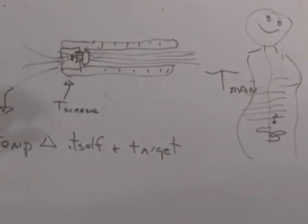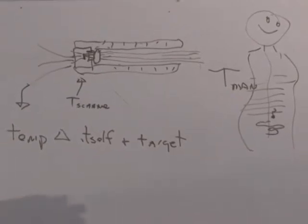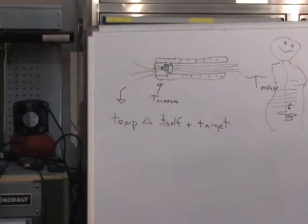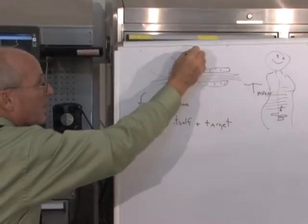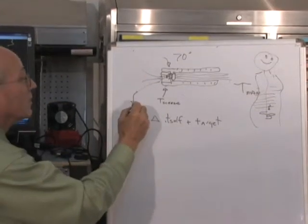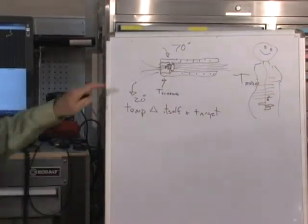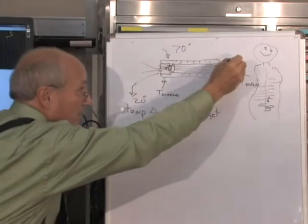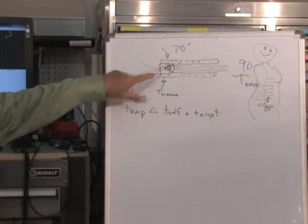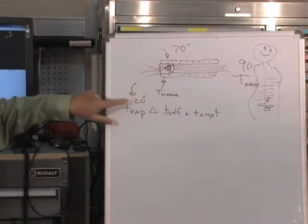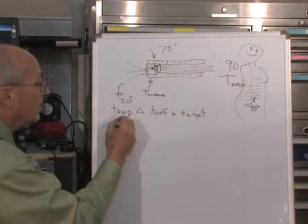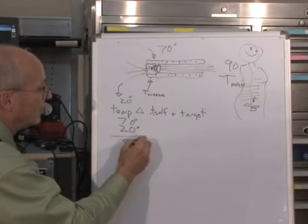Pretty simple. If the temperature of the scanner head in your office is, let's say, 70 degrees, and the temperature output from the sensor is 20 degrees, we know that the target that we're looking at is 90 degrees. If we know the temperature of the scanner head and we have the output from the infrared sensor and we add them together, 20 and 70, we have 90 degrees.